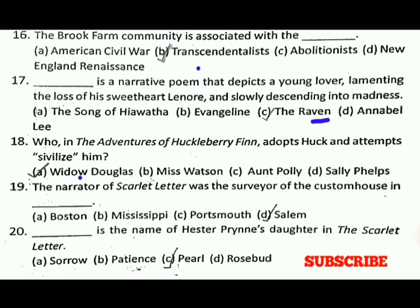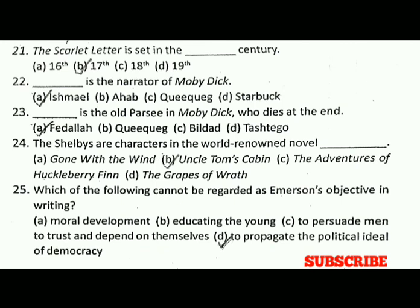Question number nineteen: the narrator of 'The Scarlet Letter' was the Surveyor of the Custom House in dash. The correct answer is D, that is Salem. Question number twenty: dash is the name of Hester Prynne's daughter in 'The Scarlet Letter'. The correct answer is C, that is Pearl. Question twenty-one: 'The Scarlet Letter' is set in the dash century. The correct answer is B, that is the 17th century.